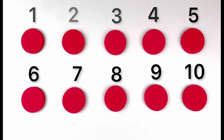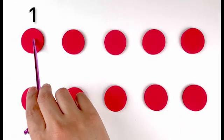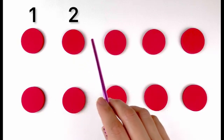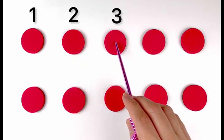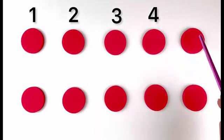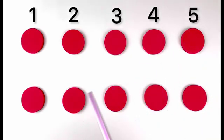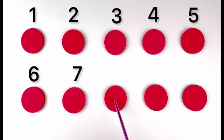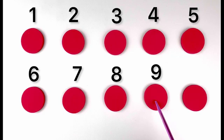Let's count them again. One, two, three, four, five, six, seven, eight, nine, ten. Ten red circles.